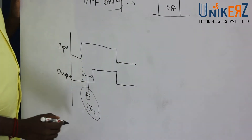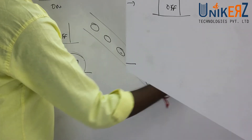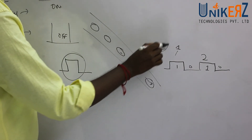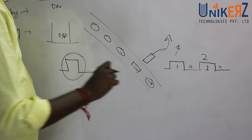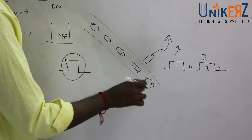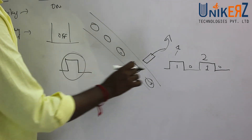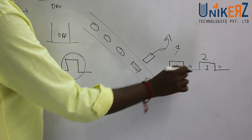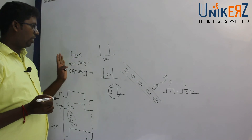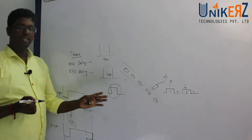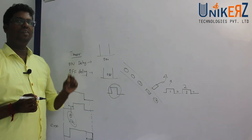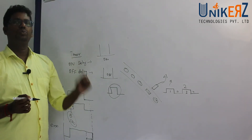What is the half delay? In a counter, we will get the input. Logically, if you are on this product, you will get the pulse. So, timer, counter — how do you use these two? How do you use these two softwares?